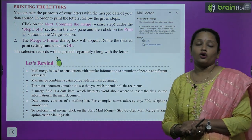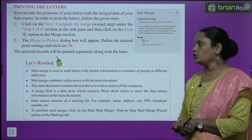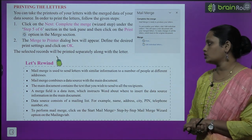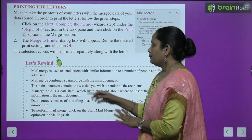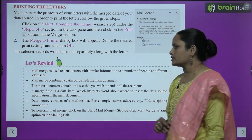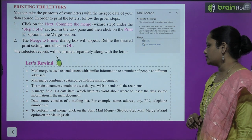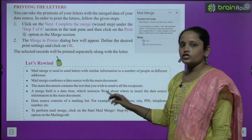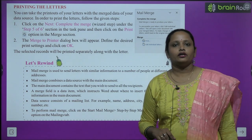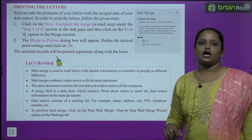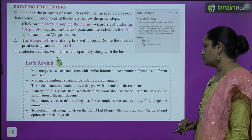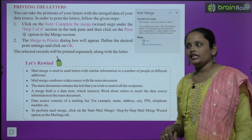Let us rewind. Mail merge is used to send letters with similar information to a number of people at different addresses. Mail merge combines a data source with a main document. The main document contains the text you wish to send to all recipients. A merge field is a data item that instructs Word where to insert data source information in the main document. Data source consists of a mailing list including name, address, city, pin, telephone number, etc. To perform mail merge, click on Start Mail Merge, then Step by Step Mail Merge Wizard, under the Mailings tab.